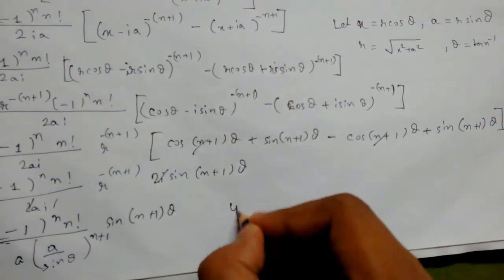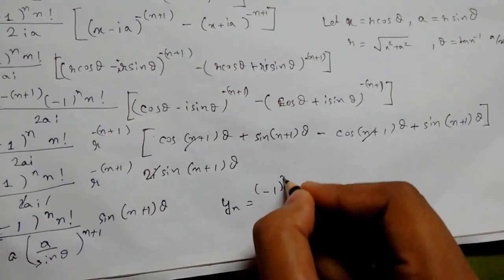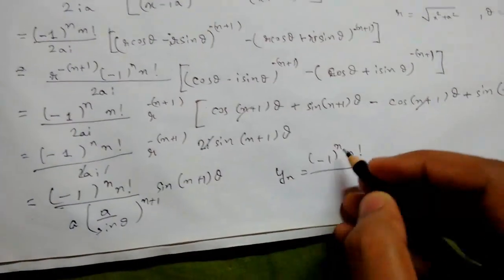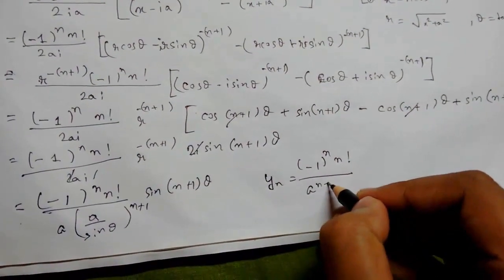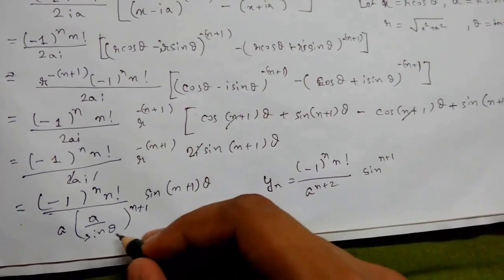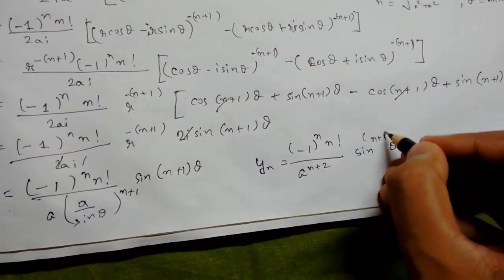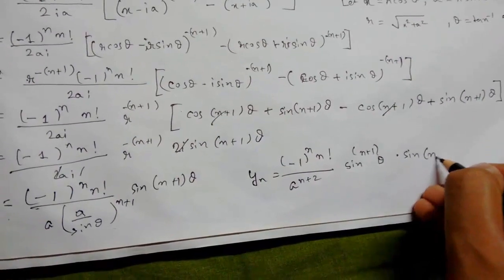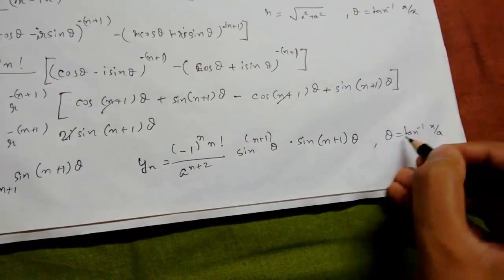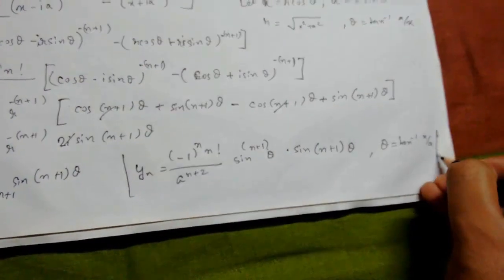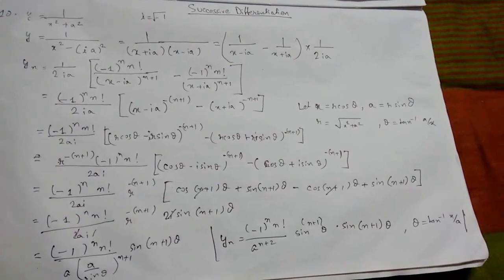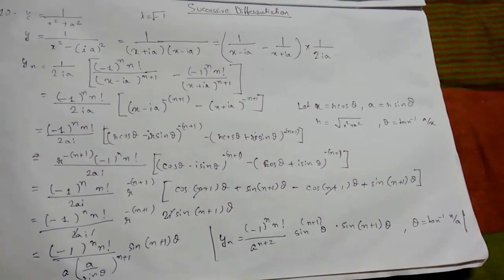Our final answer is: yₙ equals (−1)ⁿ · n! · sin(n+1)θ divided by a^(n+1) · r^(n+1), where θ equals tan inverse of a upon x. This is our basic standard formula. If you have any problems comment below, and if you liked this video hit the thumbs up button and subscribe to my channel for more videos. Thank you.